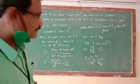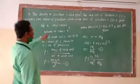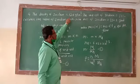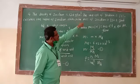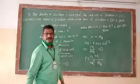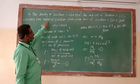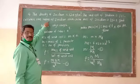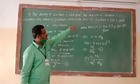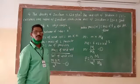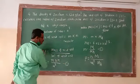Now let us continue with problem number 4. The density of iridium: rho is equal to 22.4 gram per centimeter cube. The unit cell of iridium is FCC (face-centered cubic). Calculate the radius of iridium atom R, and molar mass of iridium is given as 192.2 gram per mole.